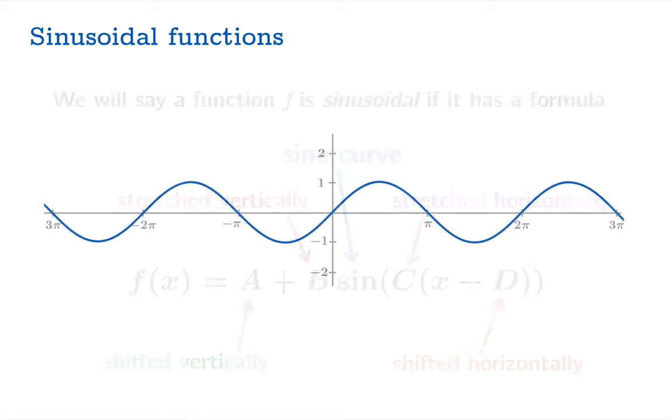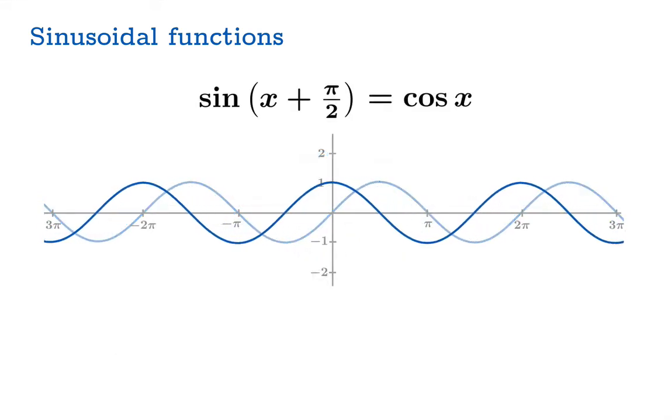For example, sine of x plus pi over 2 being a sine graph shifted over is sinusoidal, but that's just the cosine graph. So guess what? Cosine itself is sinusoidal.